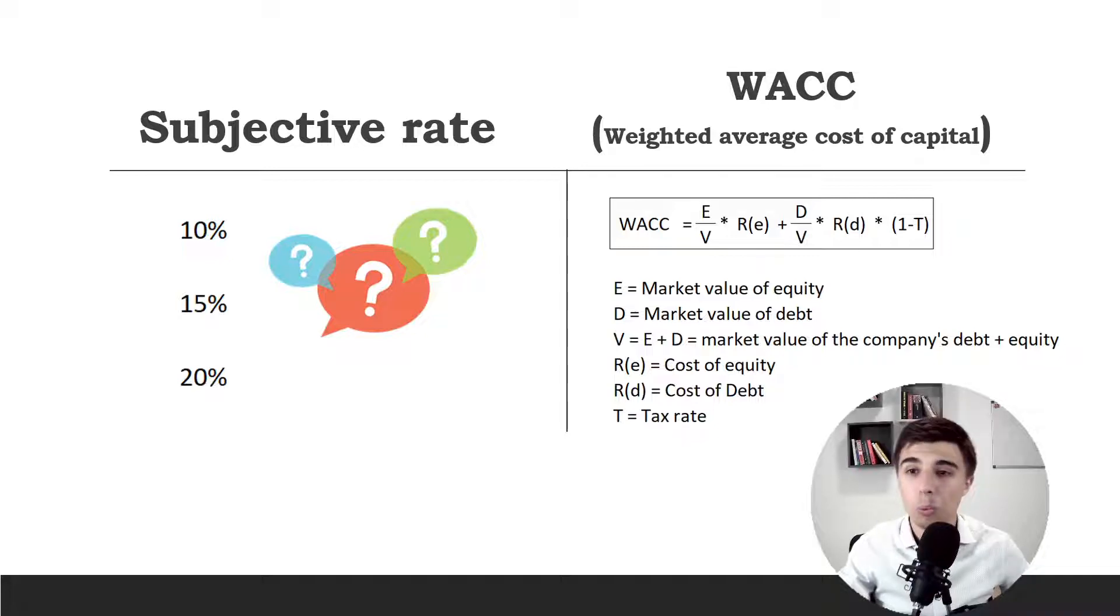On the other side, if we want a too high rate of return—if we're trying to get 40%—we might end up not buying anything because everything will seem too expensive, but not overvalued. And that's a key distinction to make.